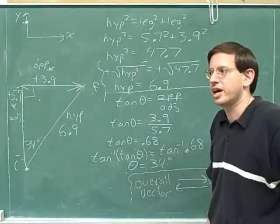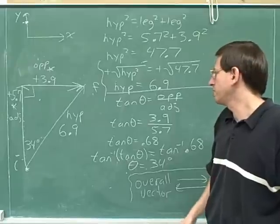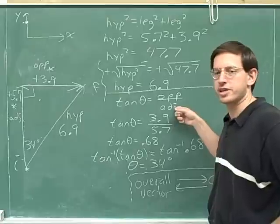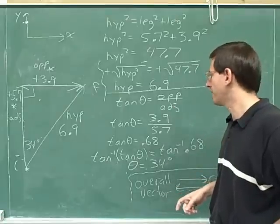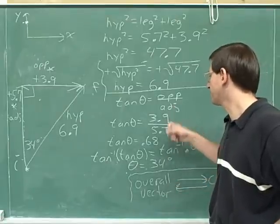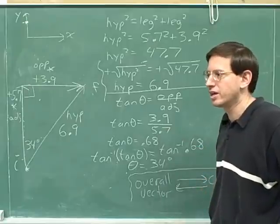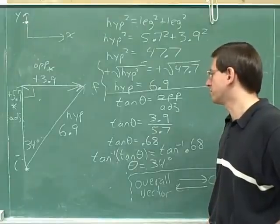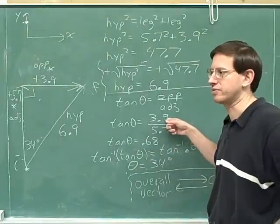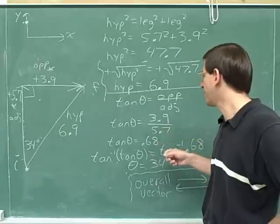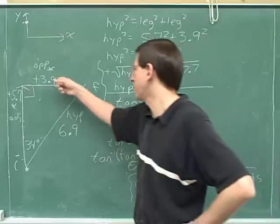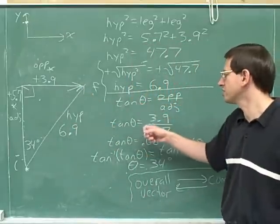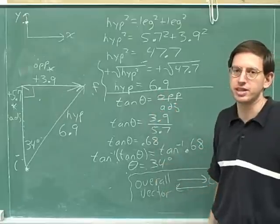Let me remind you one more time that usually, when you form a tangent, you're normally going to be putting the vertical component over the horizontal component. But it doesn't always work that way. In this problem, we end up putting the horizontal component over the vertical component. So don't assume that you're always going to put the vertical component on top of the tangent fraction. On this problem, we put the horizontal component 3.9 on the top and the vertical component on the bottom.